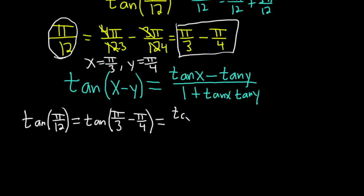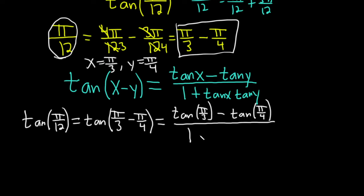So this gives us tangent of pi over 3 minus tangent of pi over 4, all divided by 1 plus tangent of pi over 3 times tangent of pi over 4. Some people skip steps if they already know the values, but showing all the work makes it easier to check.